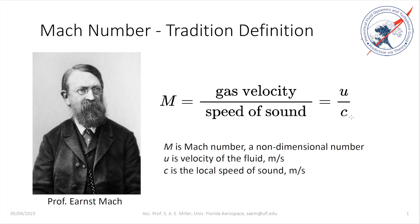This value changes in space and time typically through a flow field. U might have dimensions of meters per second and C has dimensions of meters per second. The ratio cancels the dimensions and that's why we call it a non-dimensional number. It has no dimensions.